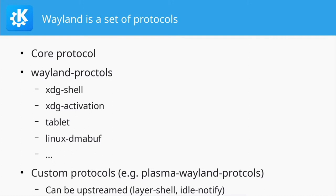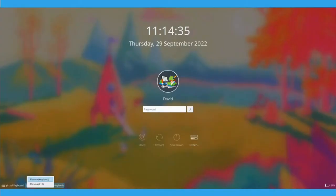If people think a custom protocol can be useful to other applications, we can upstream them rather than just creating new ones. Examples of this include layer-shell, which came from wlroots, which we started using in Plasma and is currently in the process of being standardized. Another example is idle-notify, which came from our implementation of KIdleTime on Wayland — it tells you when the user is not using the computer. People thought it was useful for general applications, and Simon from wlroots proposed standardizing it upstream.